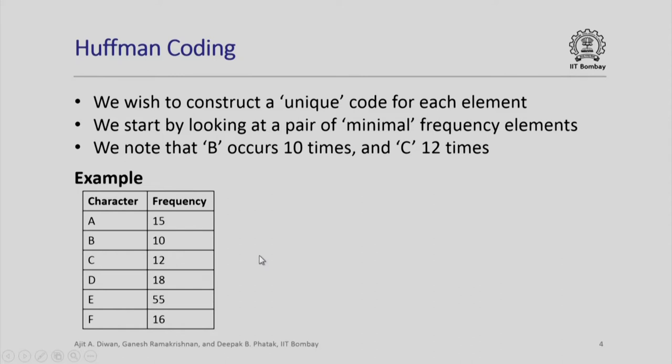What do we do? We combine these two and count the total number of times both of them occur, that is 22. We now create artificially a tree structure where we put the value 22 here at the top and the left child of this node represents the character B which occurs 10 times. The right child of this node represents the character C which occurs 12 times. Please note that this node does not have any particular character because it represents the frequency of occurrence of both the child characters together.